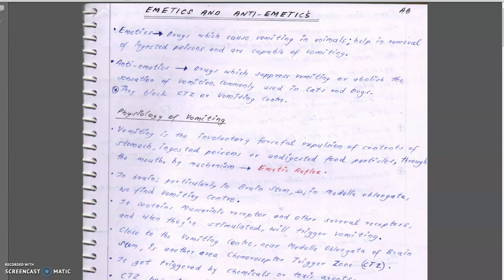We are dealing with another topic in pharmacology: emetics and anti-emetics — that is, inducing vomiting and preventing vomiting. Emetics are drugs which cause vomiting in animals. If they have ingested any poison, via vomiting we can expel the poison and save the animal. Anti-emetics are drugs which suppress vomiting.